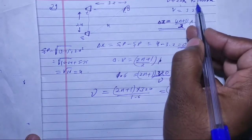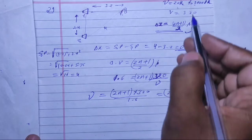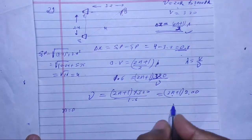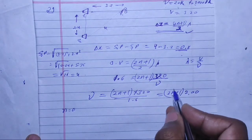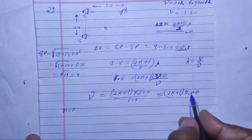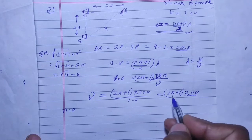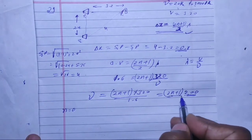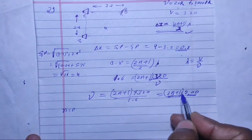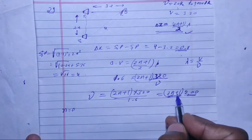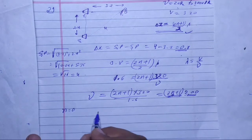The frequency must be in the range 20 to 20,000 Hz. When n = 0, frequency = 200 Hz, which is in range. You can also use n = 1, 2, 3, and so on. The maximum value of n can be 49, giving frequency = 99 × 200 = 19,800 Hz.